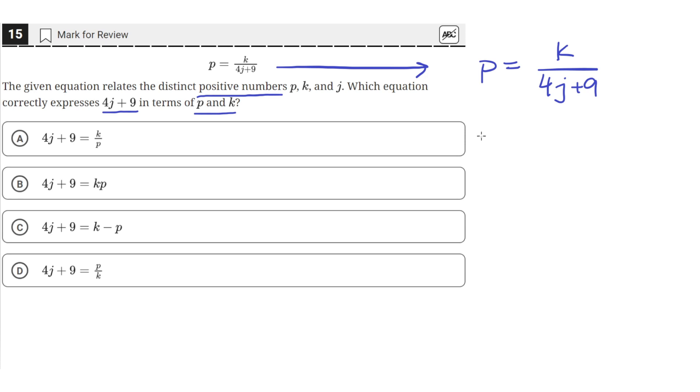So we'll have 4j plus 9 times the quantity p equals k. We just multiplied both sides by 4j plus 9. So on this side, when we multiply by 4j plus 9, these two would cancel out since we're dividing 4j plus 9 by itself, and then we just have 4j plus 9 on this side.